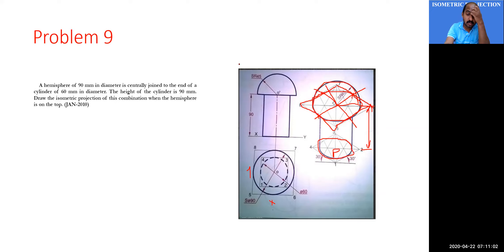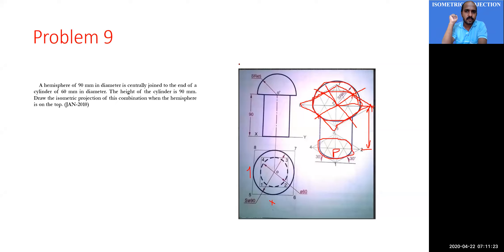Is it clear? Yes. It's a combination — you first draw the isometric projection of the cylinder, then the isometric projection of the hemisphere. You need not draw the top surface of the cylinder separately, because the hemisphere circle is resting on and attached to the top surface of the cylinder, so it is covered.